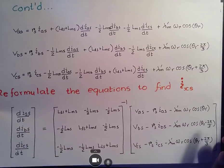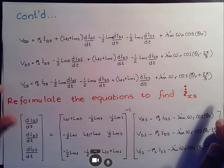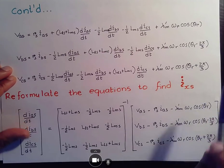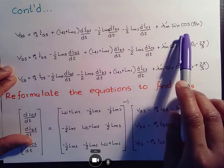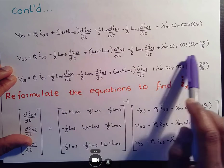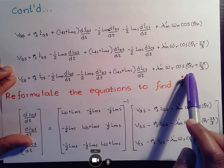All right. So what does this look like? Well, it's not that bad. So we have our VAS equation, VBS equation, and VCS equation.